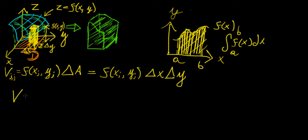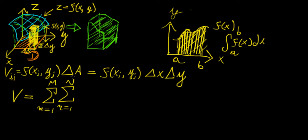The total volume is given by a double sum, because we need to sum over every combination of the two indices. So we have a sum from m equals 1 to M, and n equals 1 to N, of f(x_m, y_n) times delta x times delta y.